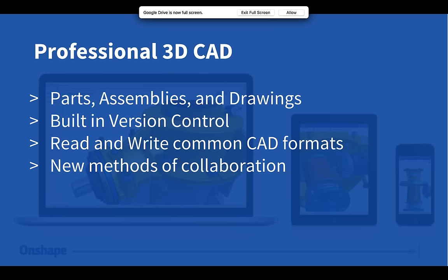We consider ourselves professional 3D CAD. When I say professional 3D CAD, people generally think of parts, assemblies, and drawings — we have all three major pieces. Some things unique to OnShape: we have built-in version control, so you don't need a separate data management system. That concept goes away with OnShape — there is no concept of files to manage. We can also read and write many common CAD formats: SolidWorks, IGES, STEP, Parasolid, Inventor, CATIA, Creo, and others.